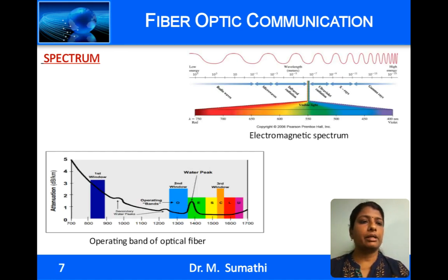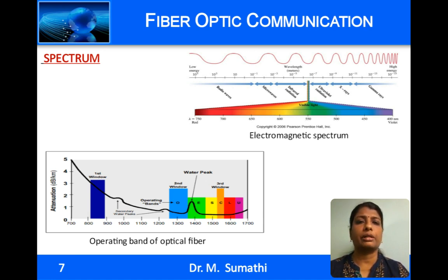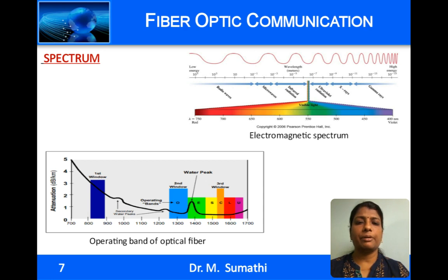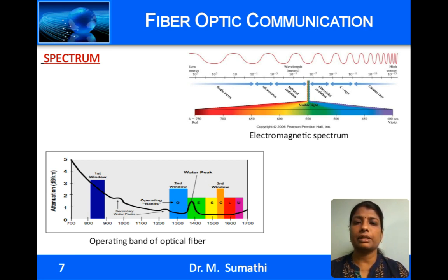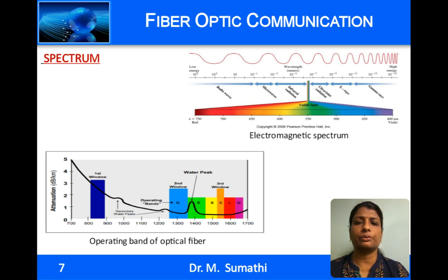The electromagnetic spectrum ranges from low frequency to higher frequencies. The visible spectrum falls in the 400 to 700 nanometer range. Close to that is the IR or infrared spectrum with the near and far IR, and this is the region where optical fibers operate. The second chart gives the operating bands of optical fiber. The first window is centered at around 850 nanometers. The second window, called the O band, is centered at around 1310 nanometers and has lower attenuation than the first window. The next is the extended or E band, where attenuation is slightly higher due to absorption by hydroxyl ions.